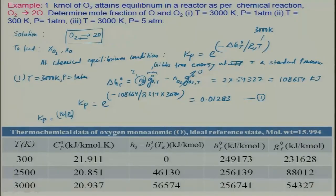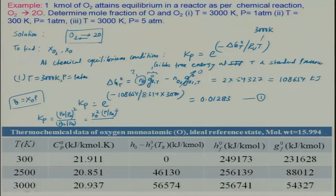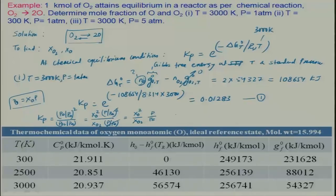Substituting partial pressures as PO = xO·P and PO₂ = xO₂·P, we get Kp = (xO²·P/Pa) / xO₂, which simplifies to Kp = (xO² / xO₂)·(P/Pa). This is Equation 2. Kp is known, P/Pa is known, and xO and xO₂ are the two unknowns.